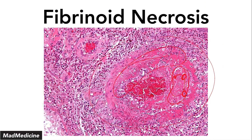Fibrinoid necrosis is usually due to either a short period of really high blood pressure — like a hypertensive emergency or preeclampsia — or some sort of autoimmune condition affecting the blood vessels, whether small, medium, or large. And with that, this is the end of the two-part lecture series on cellular necrosis.